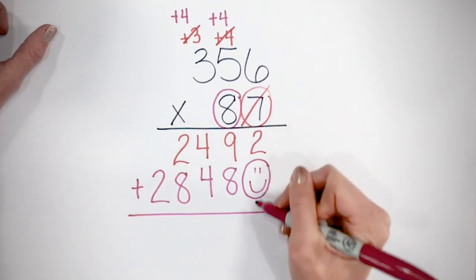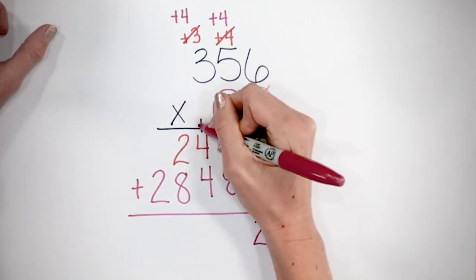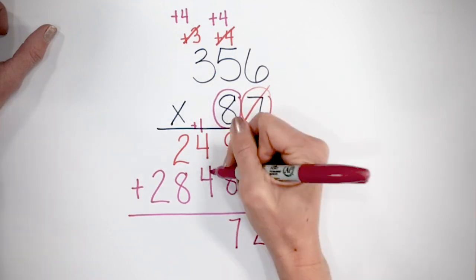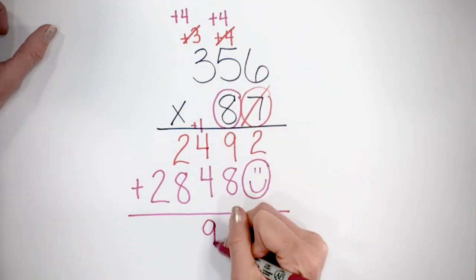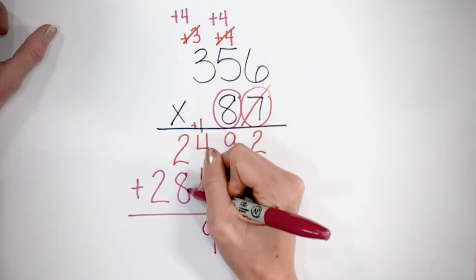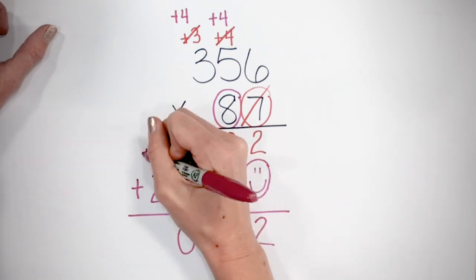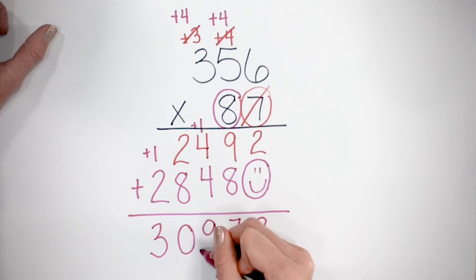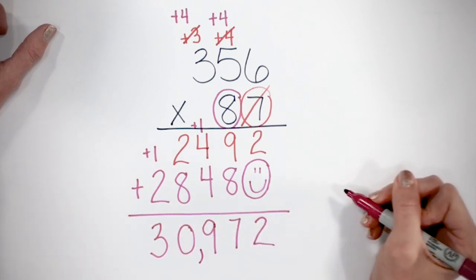Now I can add my two products. 2 plus 0 is 2. 9 plus 8 is 17. 4 plus 4 plus 1 is 9. 2 plus 8 is 10. And 2 plus 1 is 3. So our final product is 30,972.